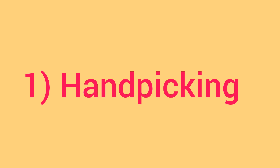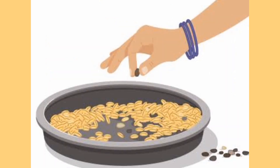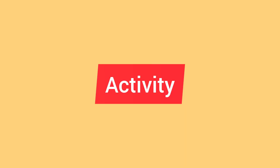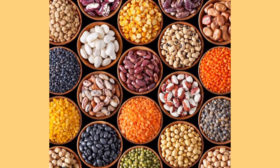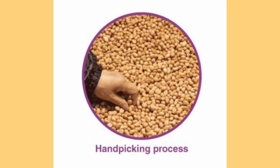The first method is handpicking. Handpicking is the method in which substances in a mixture can be separated by just picking them out with the help of the hand from the mixture. It is used to separate larger sized impurities like stones from pulses. One activity: bring a packet of pulses or grains from a shop to the class, spread it on a newspaper, and you can observe pulses mixed with impurities and remove them with the help of your hand.